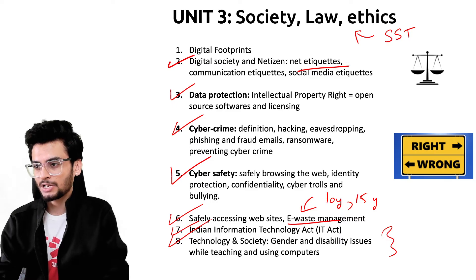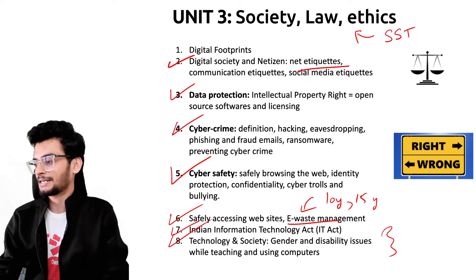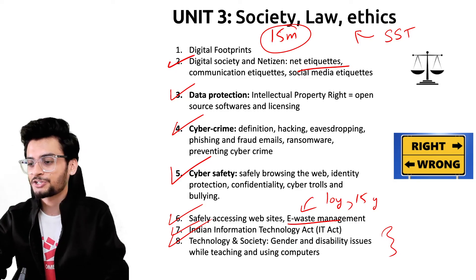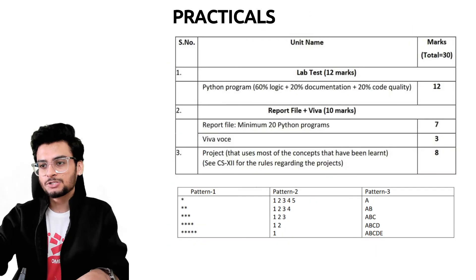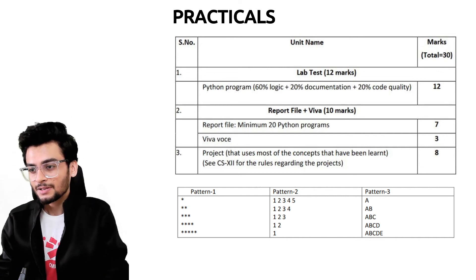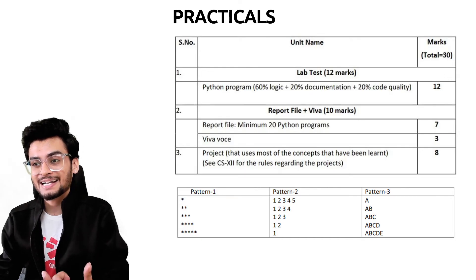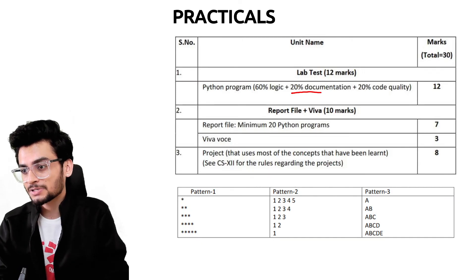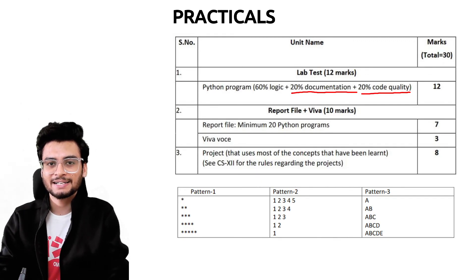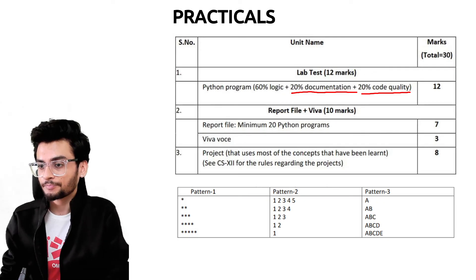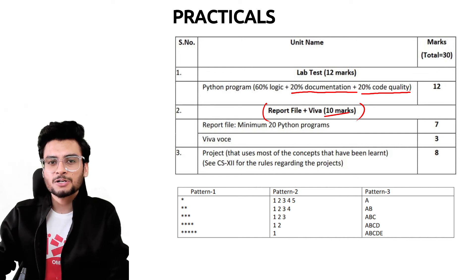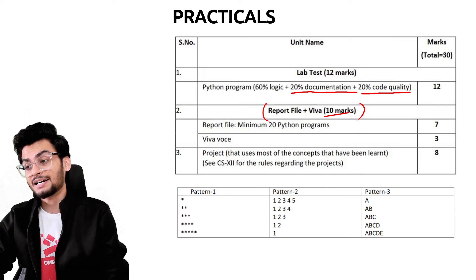If you remember, we also studied etiquette — that will be the first thing covered in Unit 3. This unit is for 15 marks and will most probably be asked in Term 2 examinations. Now for the practical part: when you create a practical program, your marks won't only be based on the code you wrote on the PC — there will also be 20% documentation and 20% code quality. You may need to submit a written register or theory along with your Python program. The viva and file together are for 10 marks.